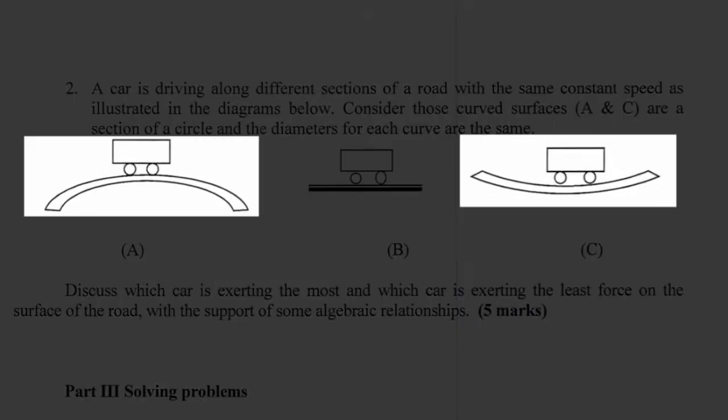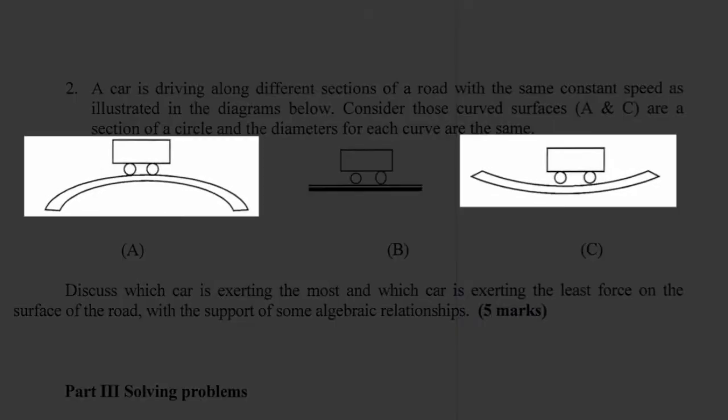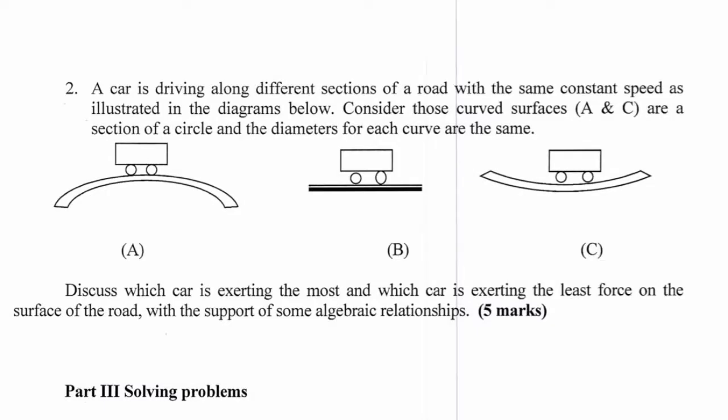So when we look at A and C we're assuming the same diameter or in other words the same radius. Discuss which car is exerting the most and which car is exerting the least force on the surface of the road with the support of some algebraic relationships.